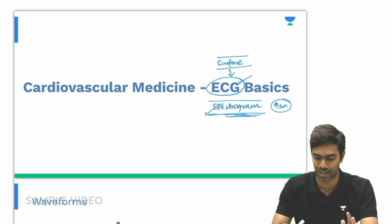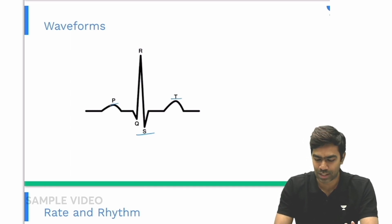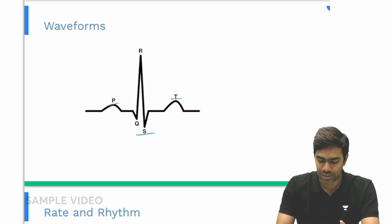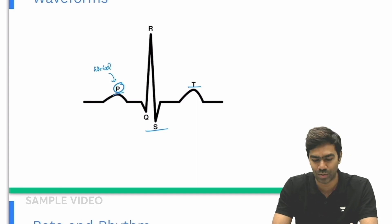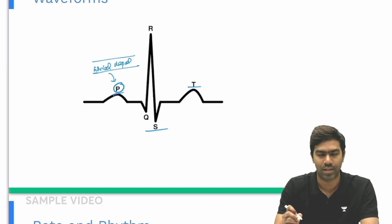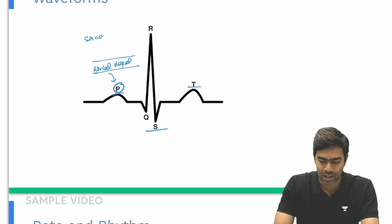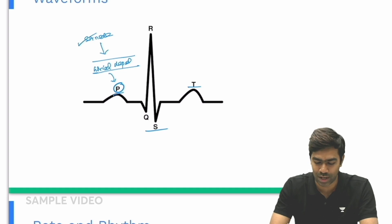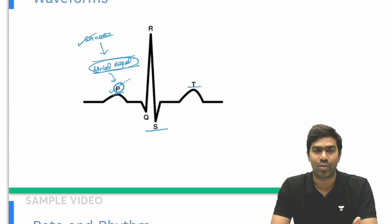Now moving to the common waveforms seen on the ECG: we have the P wave, QRS complex, T wave, and optionally a U wave. The P wave is generated due to atrial depolarization. Physiologically, SA node firing results in atrial depolarization, which produces the P wave. Many people falsely equate SA nodal firing to the P wave — that should not be done. It is only atrial depolarization that generates the P wave, not the SA nodal firing itself.